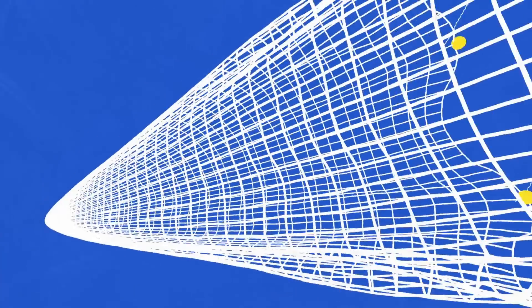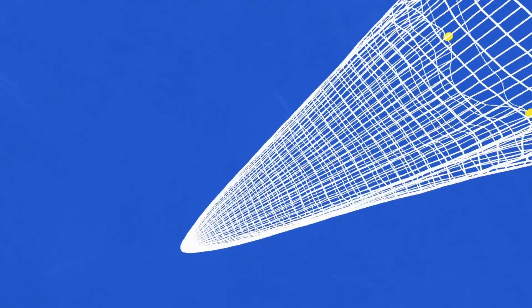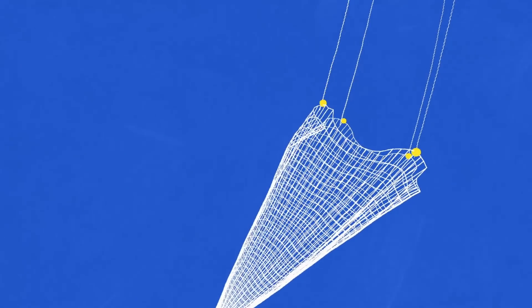Then there's trawling where a cone-shaped net is dragged through the water at varying depths scooping up fish of all sizes. Trawling along the seafloor causes damage and uplifts sediment that clogs filter feeders.